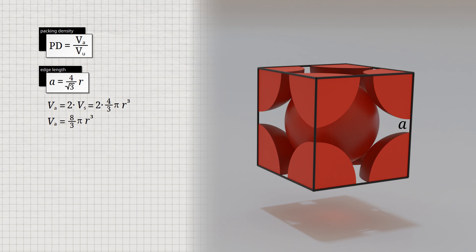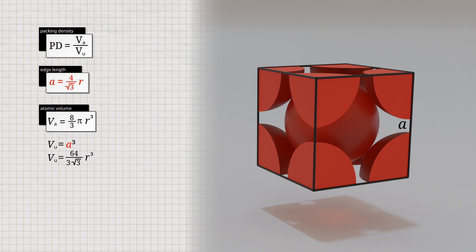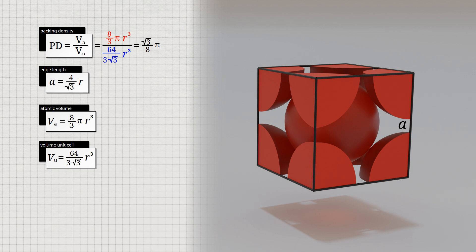We must now put this atomic volume in relation to the volume of the cubic unit cell, which results from the edge length to the power of 3. We express the edge length by the atomic radius using the previously derived relationship, and in this way obtain the formula for the volume of the unit cell. If we now put the atomic volume and the volume of the unit cell into the definition of the packing density, we can determine the packing density for the body-centered cubic lattice. We obtain a packing density of 0.68, meaning 68% of the volume in the body-centered cubic lattice is occupied by atoms.